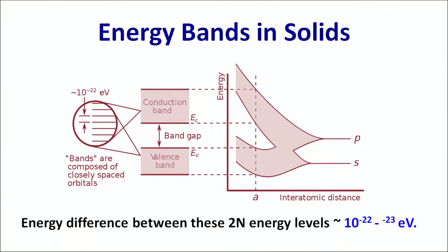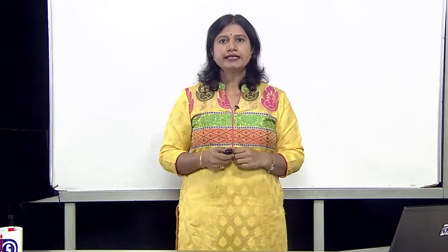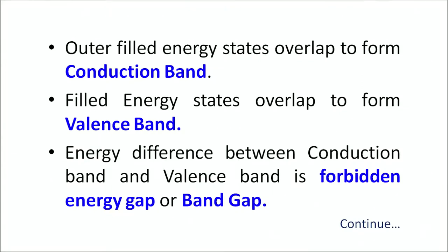In this graph, what we represent is a large number of atomic orbitals coming together and overlapping. As these atomic orbitals come closer, they overlap within themselves and form the band structure. Two distinct band structures are formed. The orbitals which are unfilled form the conduction band, and the orbitals which are filled form the valence band. Thus in a given solid, what we observe is the formation of these two bands — the conduction band and the valence band.